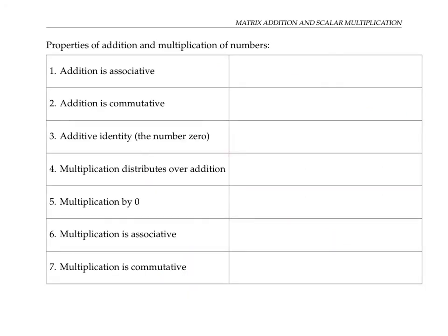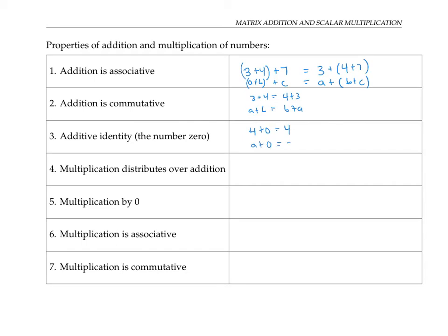I'd like to go through some properties of matrix addition and scalar multiplication. But before I do that, I want to review some properties of just addition and multiplication of numbers. Addition is associative — if you have three plus four and add another number like seven, that's the same as three plus four plus seven. More generally, (A + B) + C is the same as A + (B + C). Addition is commutative: A plus B is always the same as B plus A. There's something called an additive identity — we usually just call it the number zero. The key property is that if you add zero to any number, you just get the same number you started with.